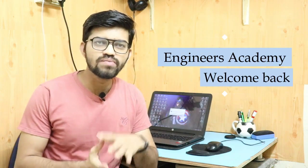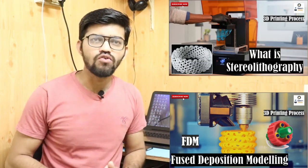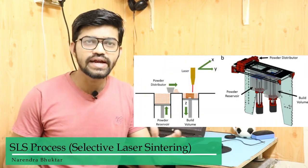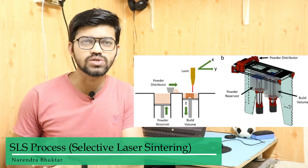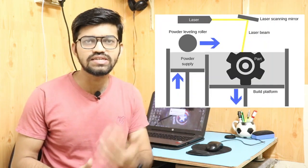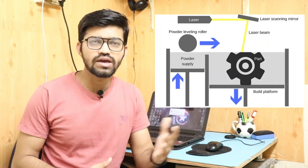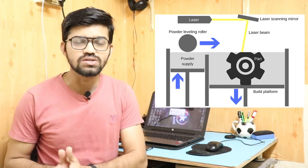Welcome back to Engineers Academy. In our previous videos we covered 3D printing processes such as stereolithography and fused deposition modeling. In this video we are going to learn about another 3D printing process — also called a rapid prototyping process — known as the SLS process, that is Selective Laser Sintering. We will cover the actual SLS process, its advantages, disadvantages, working, and applications.